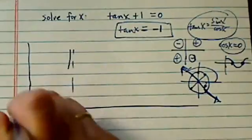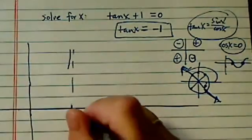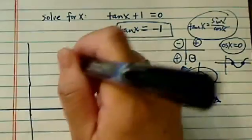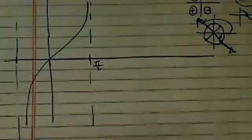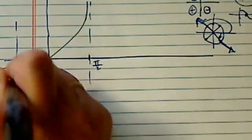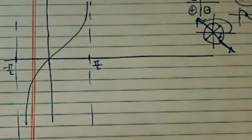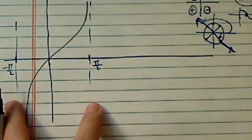So basically this pi over 2 over here goes down and comes back up. So that's the curve for minus pi over 2 to positive pi over 2. And the periodicity is pi.